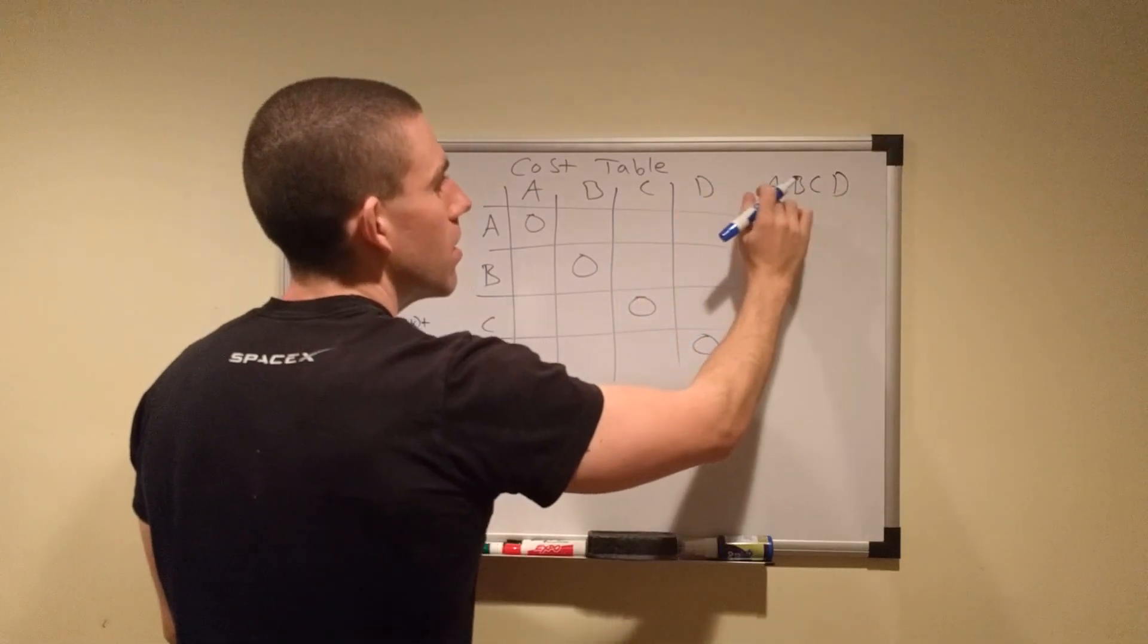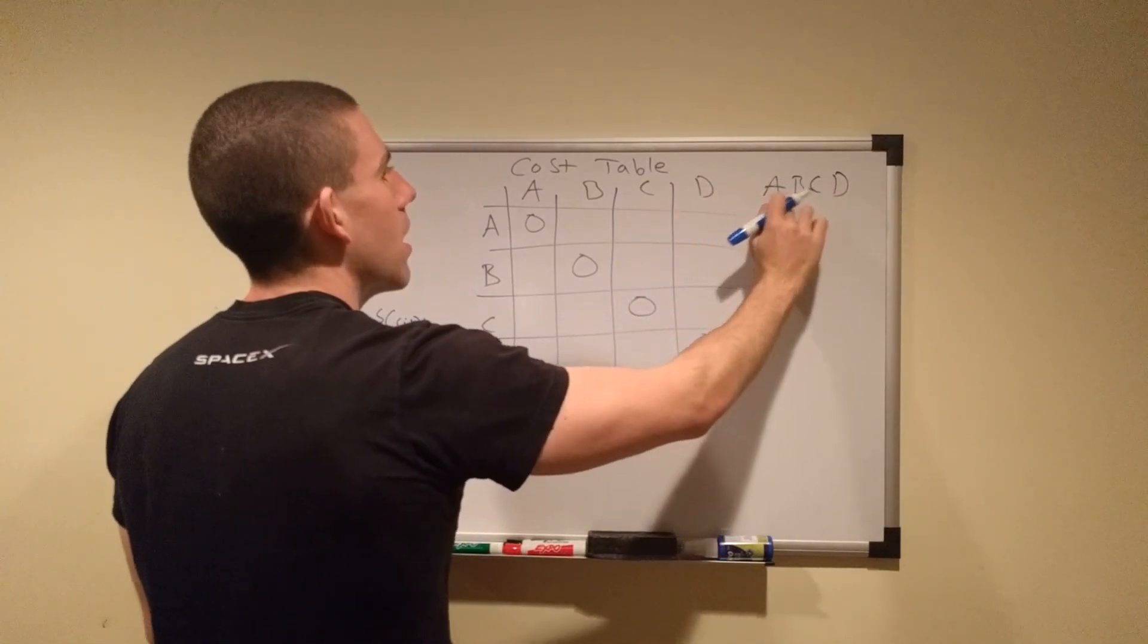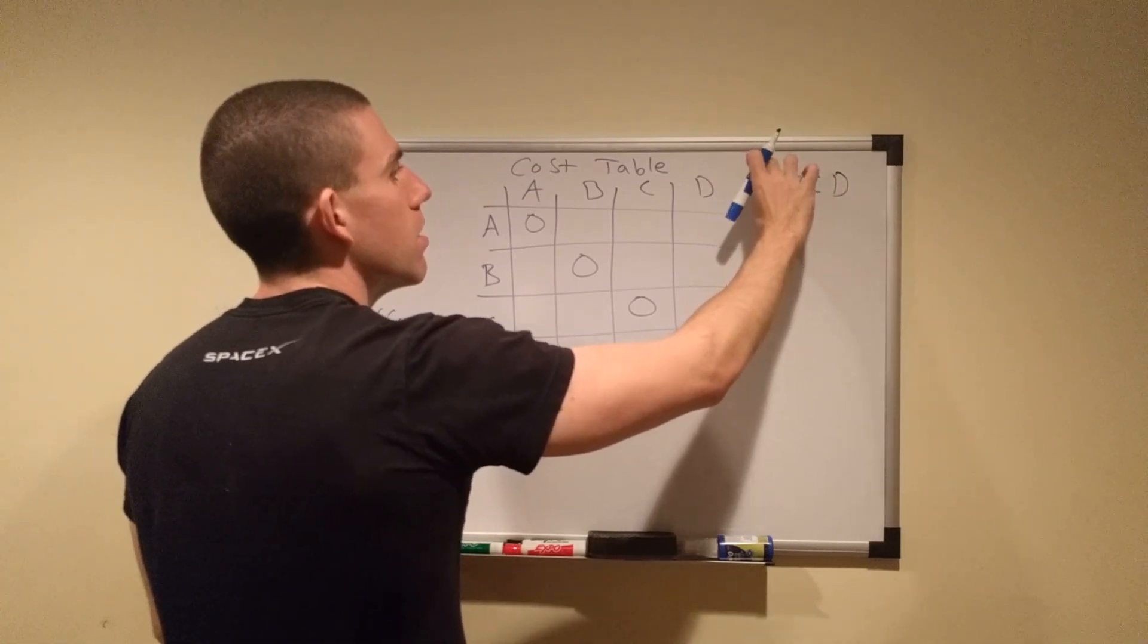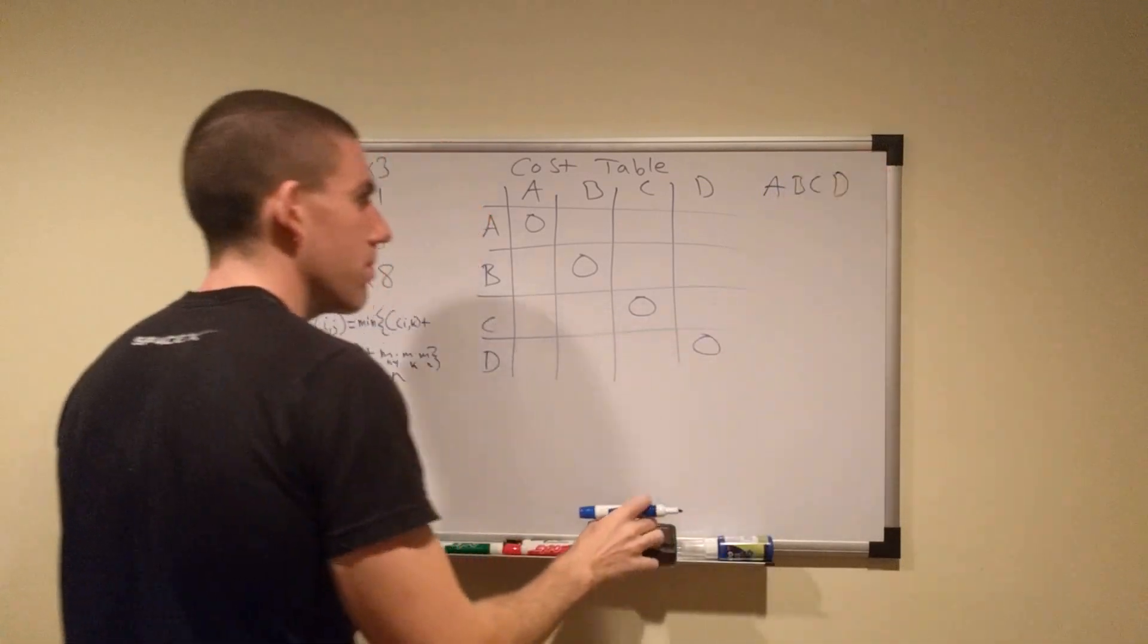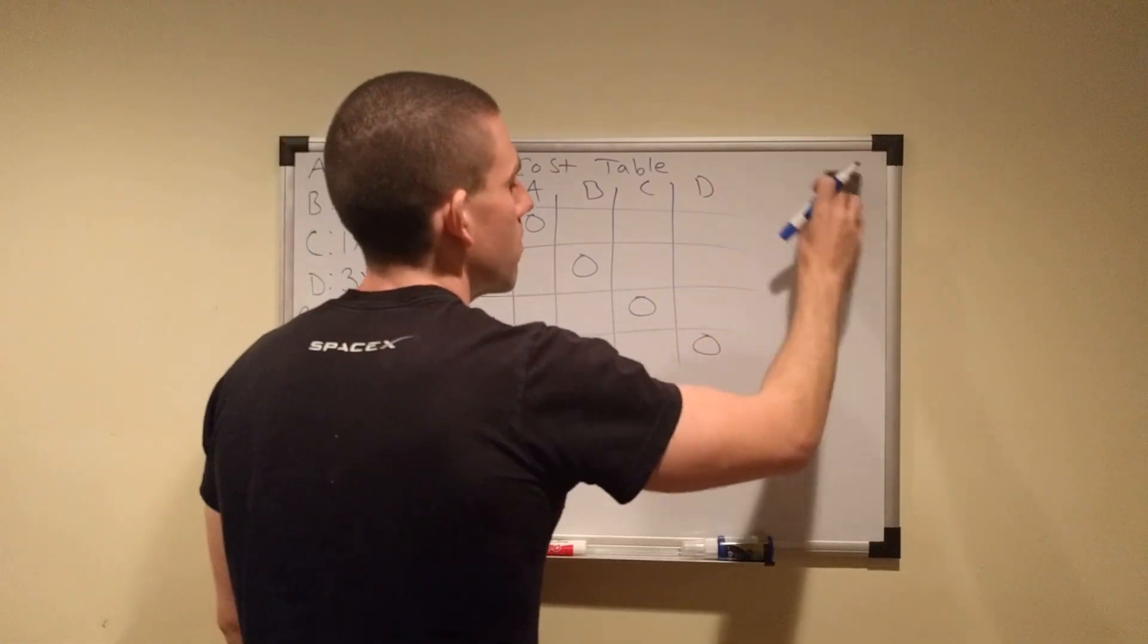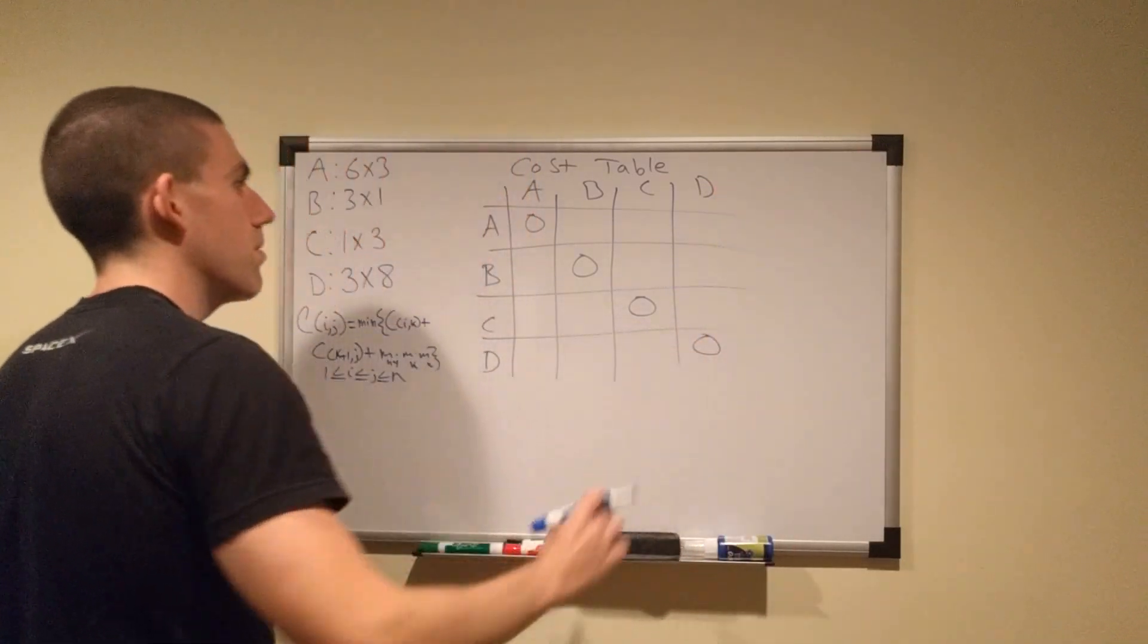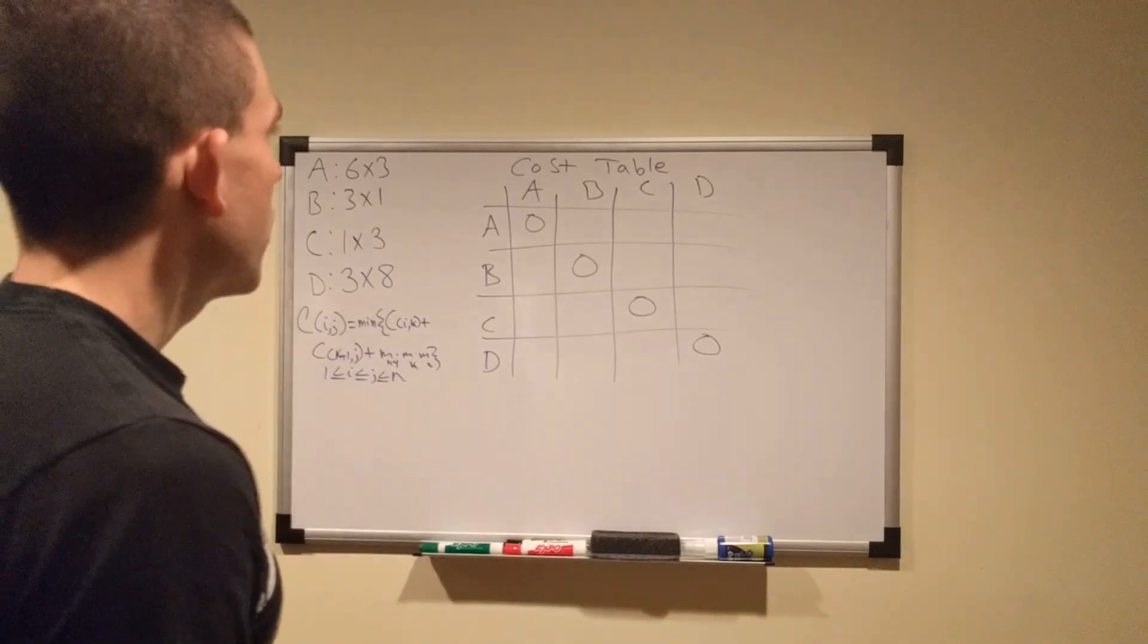If you want to think about why that works like that, we have A, B, C, D, right? We can only do these in certain orders. We can't permute any of these. So this table corresponds to every possible multiplication that we can do here, and there are only six.